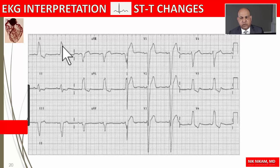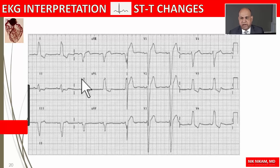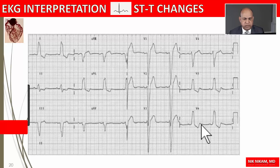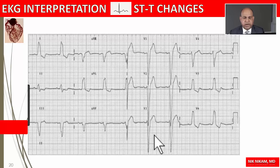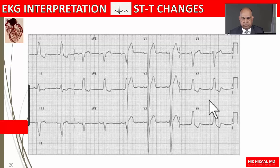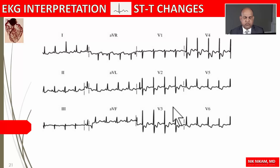Here's another example of a left bundle branch block with discordant ST changes — we call it discordant because they are not in the same direction as the QRS complex. We see down-sloping ST depression with biphasic T wave. We may also see J-point elevation with straightening of the ST segment in the anterior leads in patients with left bundle branch block, and the majority of these changes are localized to the anterolateral wall of the left ventricle.